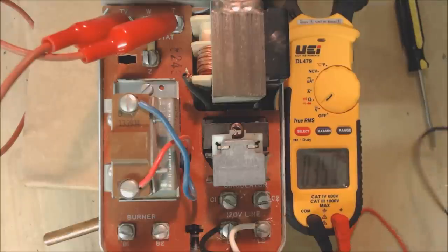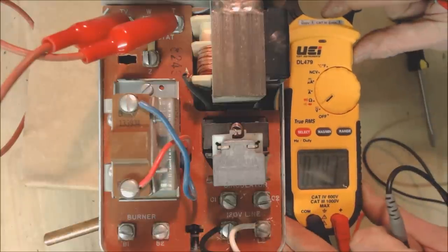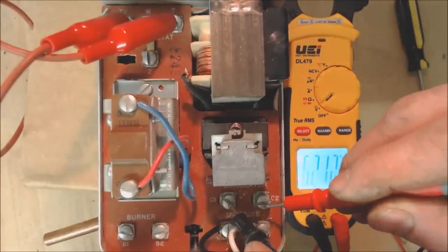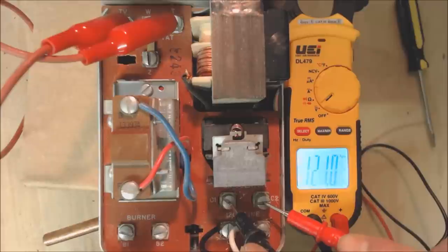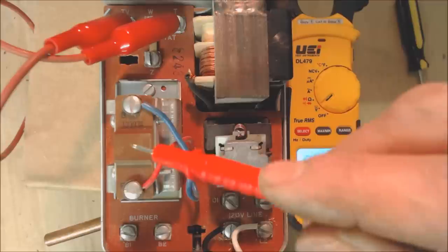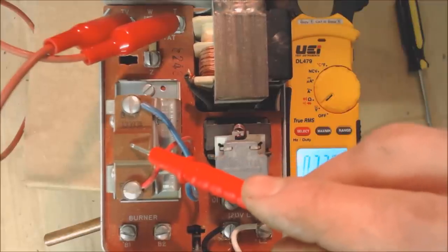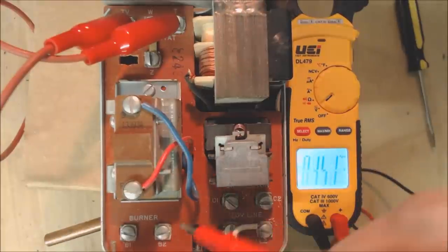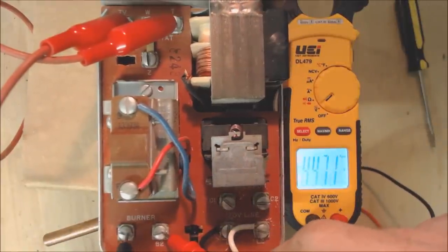We should have 120 volts on our circulating pump from C1 to C2, and you see that we have 121 volts. As long as our temperature setting on this is higher than what this is reading on the bulb, the temperature on the bulb, then we should have 24 volt power on the burner right here.